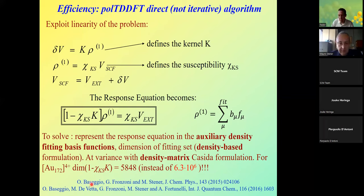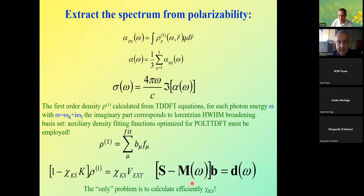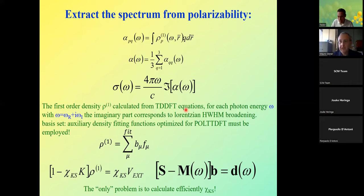The theory is well explained in the relevant paper. Once we have obtained the induced density, it is possible to obtain the polarizability, and from that the imaginary part of the dynamical polarizability, which gives the absorption spectrum. The difference with respect to Casida is that in this case we do not obtain the spectrum directly, but have to calculate it point by point — for each photon energy in the range of interest.